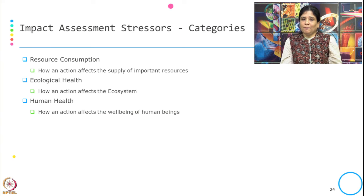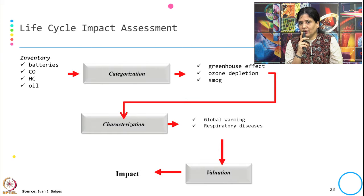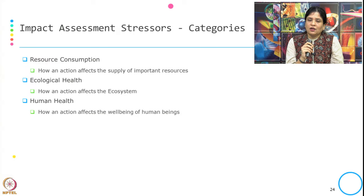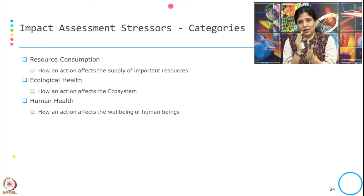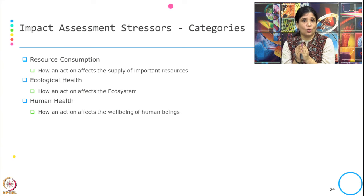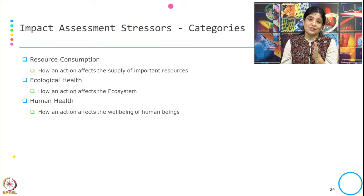When doing the impact assessment categorization, we determine whether the inventory is affecting resource consumption, ecological health, or human health. The stress created by raw material usage, energy usage, or specific processes can fall on resource consumption, ecological health, or human health.